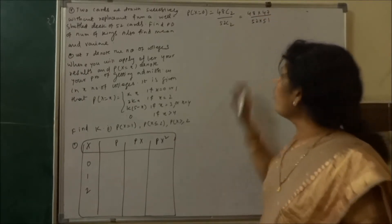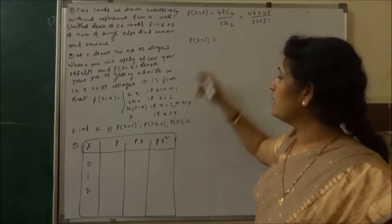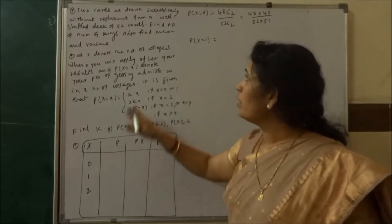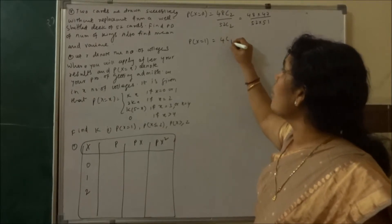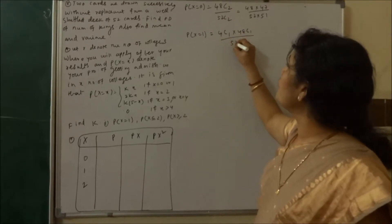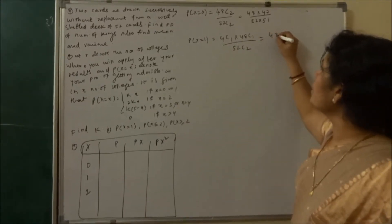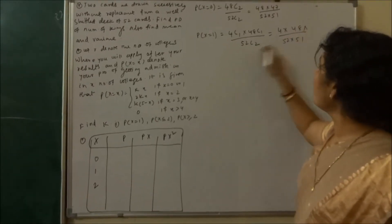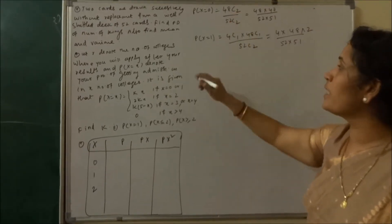Probability of x equal to 1 means one of the two drawn cards is a King. We choose 1 King from 4 Kings (4C1) and 1 non-King from 48 (48C1), all divided by 52C2. This becomes 4×48 upon 52×51 divided by 1×2, with the 2 going to the numerator.